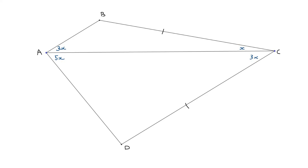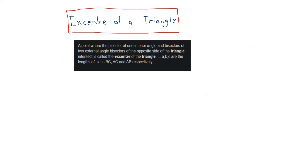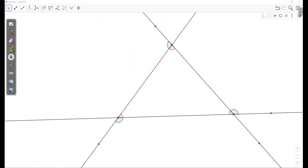To solve this I'm going to use a theorem called the x-center of a triangle, which is defined as a point where the bisector of one interior angle and the bisectors of two external angles of the opposite sides of the triangle intersect, meeting at a point called the x-center. Let me show you what that means on this triangle.